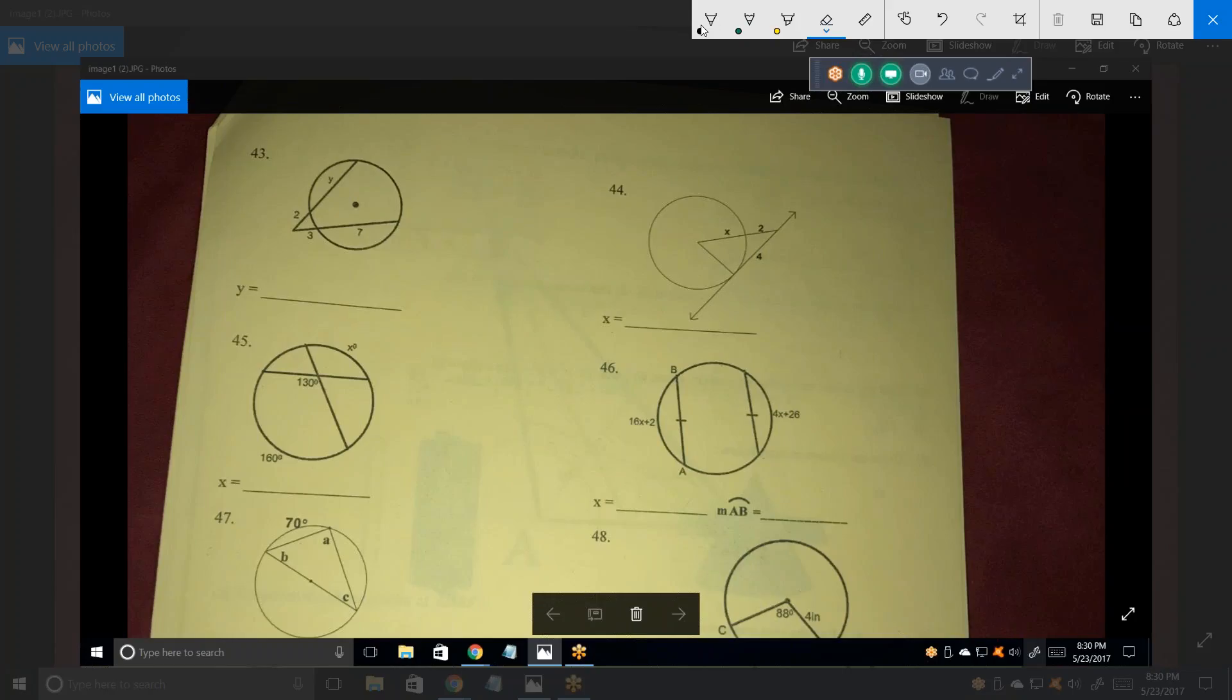So what theorem applies on 43? In other words, what equation can you write? Is it like 2 over 3 equals y over 7? No. It's this segment times the whole segment equals that segment times its whole segment. So it's 2 times 2 plus y is the whole line. That has to equal 3 times 10. Now you have 4 plus 2y equals 30, 2y equals 26, y equals 13.